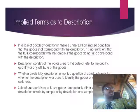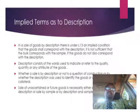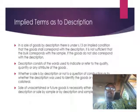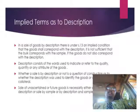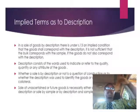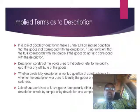Description actually refers to words which indicate the quality, quantity, or any attributes of the goods. There are certain instances where goods are sold by description — for example, where goods are unascertained, those goods are sold by description. Future goods are also sold by description. Additionally, where the buyer has not even seen the goods — any good merely described to the buyer is a good sold by description.